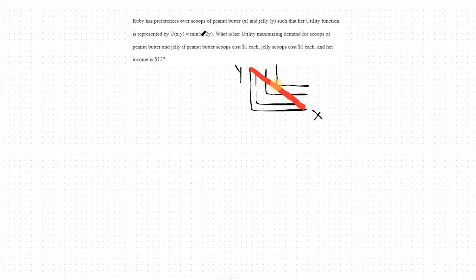Let's look at this specific question. In this question, our utility function over scoops of peanut butter and jelly is min of x comma 2y. The point where our utilities from each equate is where x equals 2y. That would be this point right here. It would also be this point right here or this point right here.